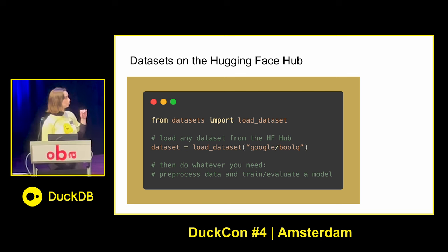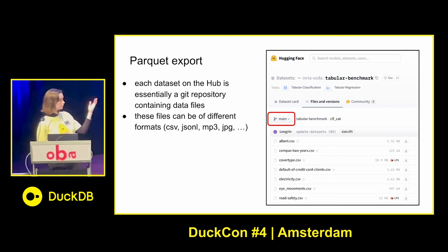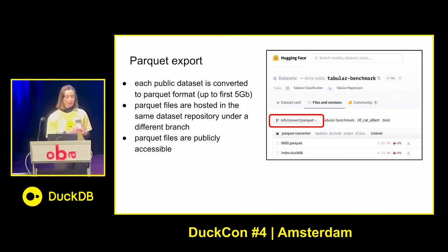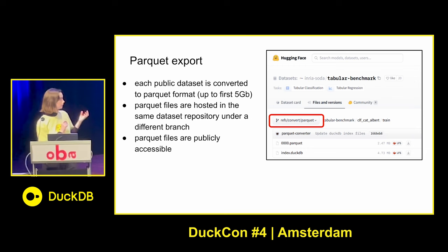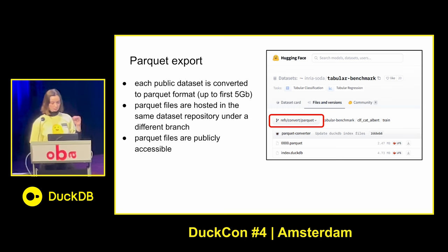To make this possible, we first unified everything on the Hugging Face Hub. Each dataset on the Hub is essentially a GitHub repository with data files that can be of different formats — for example, CSV, or text or audio files. To make it easier to work with them using external tools, we converted each public dataset from its original format to Parquet format. So in each dataset repository there is an additional utility protected branch where we host Parquet files. For now we do this for the first five gigabytes of raw data, and they are publicly accessible. There is also a file called index.duckdb, which I'll talk about later.